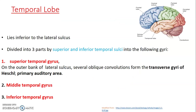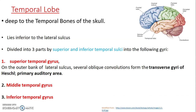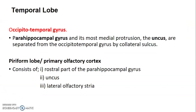The temporal lobe lies inferior to the lateral sulcus of Sylvius. It is divided into three gyri by the superior and inferior temporal sulci: the superior temporal gyrus, middle temporal gyrus, and inferior temporal gyrus. The superior temporal gyrus has several oblique convolutions that form the transverse gyri of Heschl, which is the primary auditory area. The temporal lobe is located deep to the temporal bone of the skull.